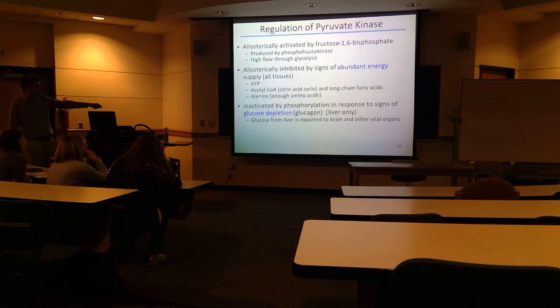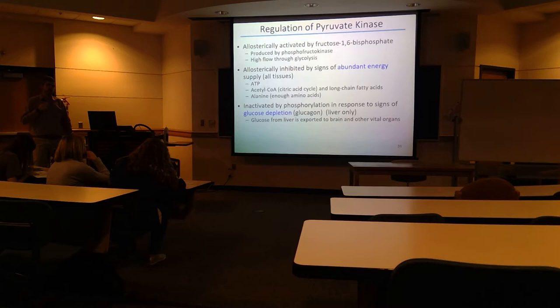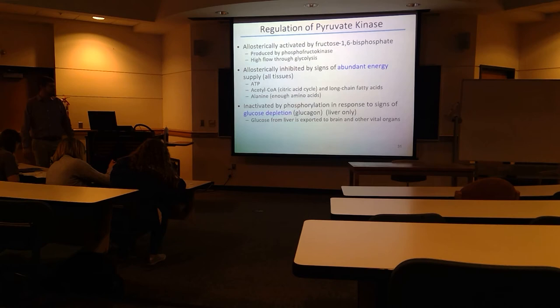Finally, pyruvate kinase is regulated in the liver by phosphorylation induced by hormones. Phosphorylation is going to inactivate it. When blood glucose levels are lowered, glucagon is released, and glucagon will activate a kinase that phosphorylates pyruvate kinase and causes it to be inactivated.